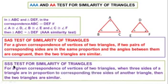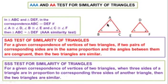SSS (Side-Side-Side) test for similarity of triangles: For a given correspondence of vertices of two triangles, when three sides of one triangle are in proportion to the corresponding three sides of another triangle, then the two triangles are similar. If AB divided by DE is equal to BC divided by EF and is equal to AC divided by DF, then the two triangles are similar by the SSS test for similarity.